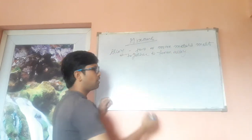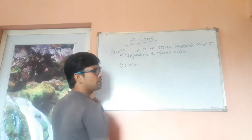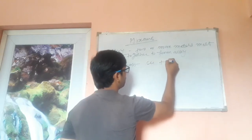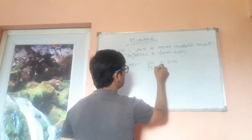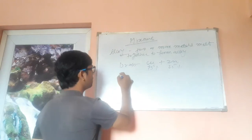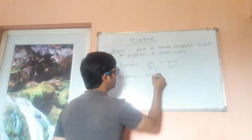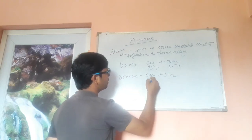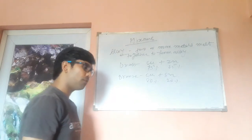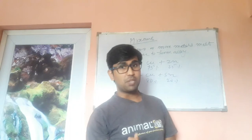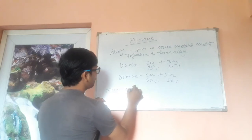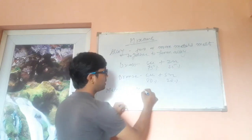For example, brass is an alloy formed with copper and zinc — about 75% copper and 25% zinc. Bronze is another alloy made of copper and tin — roughly 80% copper and 20% tin.